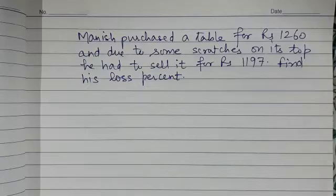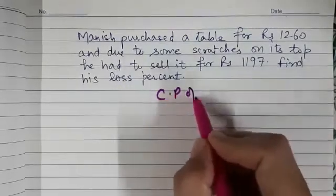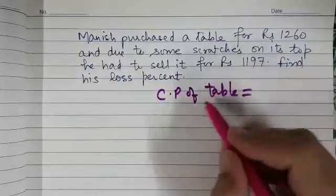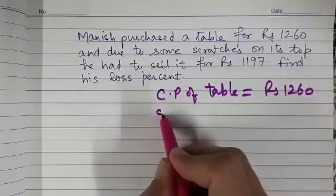Manish purchased a table for rupees 1260 and due to some scratches on its top he had to sell it for rupees 1197. So he has purchased it for rupees 1260, so that means it will be the cost price of the table. So let us write down: cost price of table is rupees 1260 and he sold it for rupees 1197.